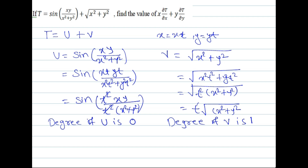Now we apply Euler's theorem. I have already made a video on Euler's theorem — those who need reference can watch that. Applying Euler's theorem to u: x(∂u/∂x) + y(∂u/∂y) = 0 · u, which equals 0.